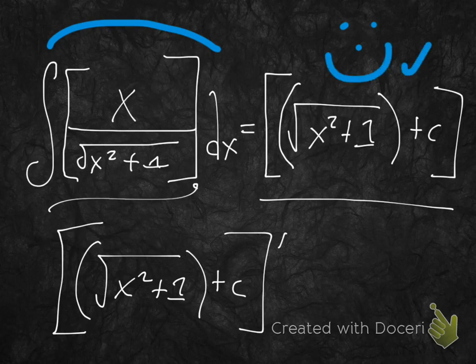So we're good to go. That's right, because radical x squared plus 1 plus c, we took the derivative of this and it gave us this. And so we're right. We're done. We did this correctly. That's the way we verify this.